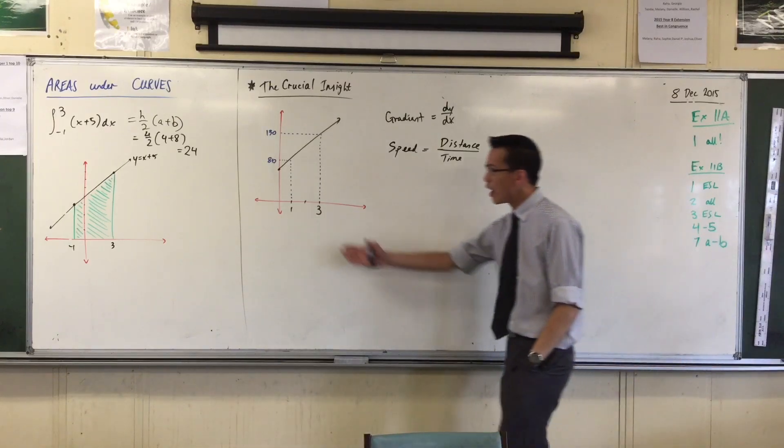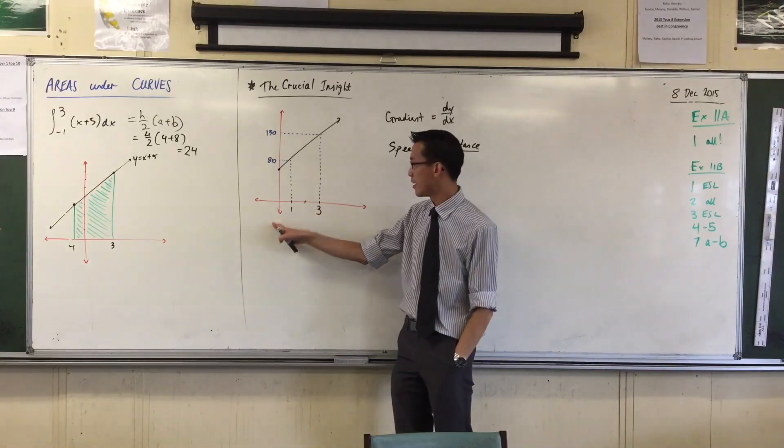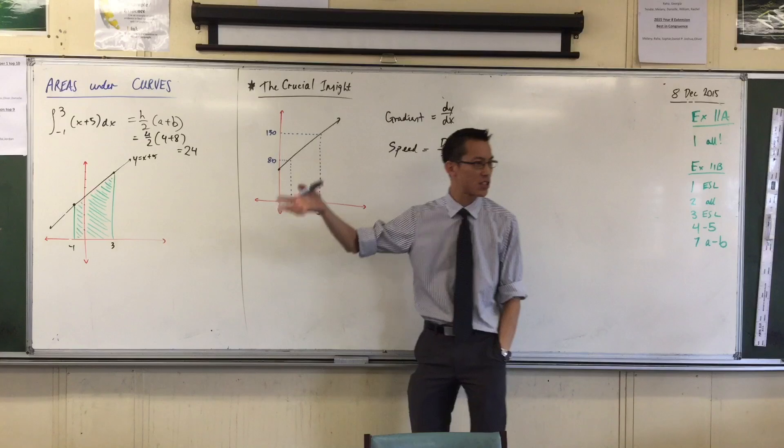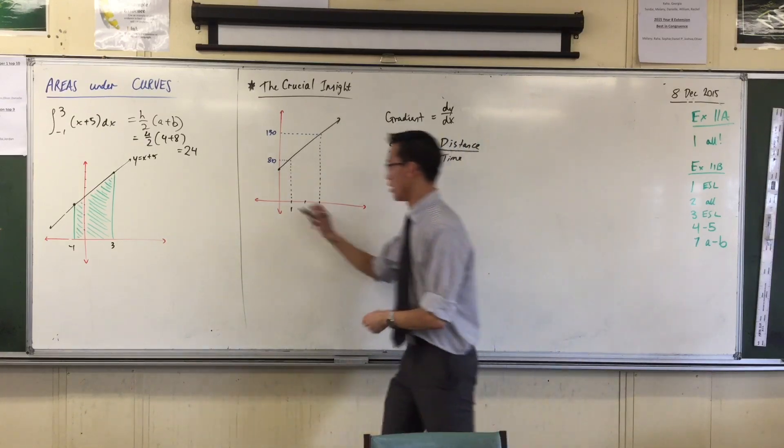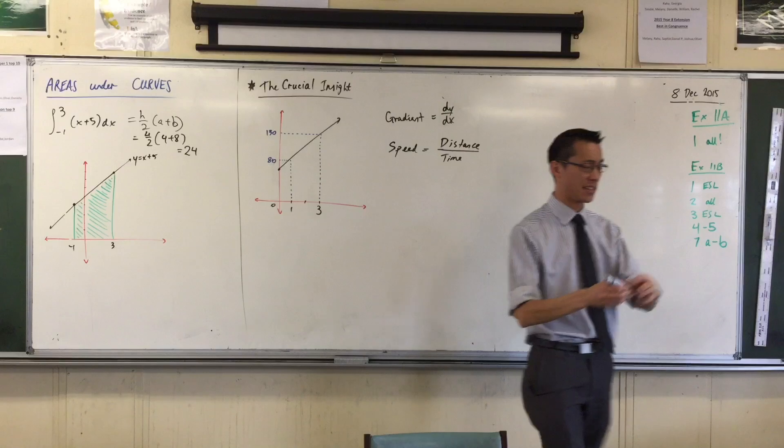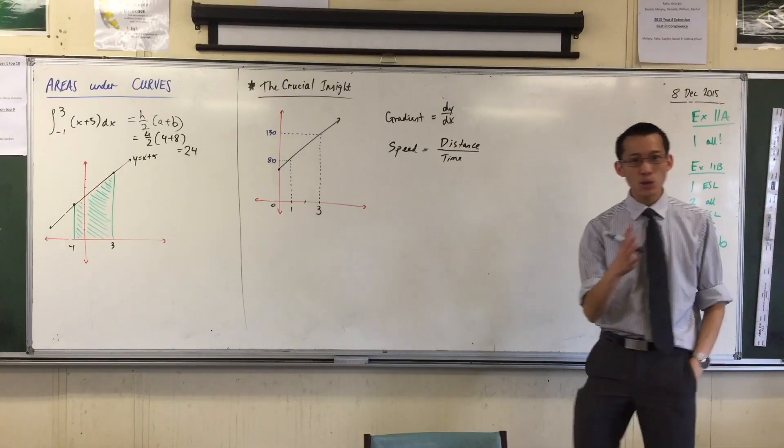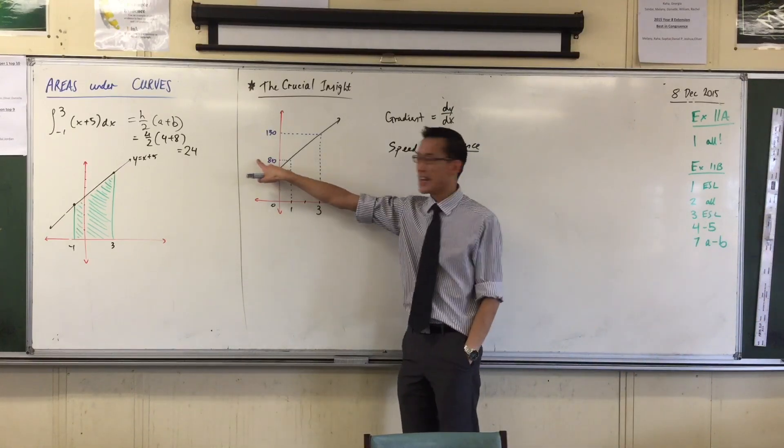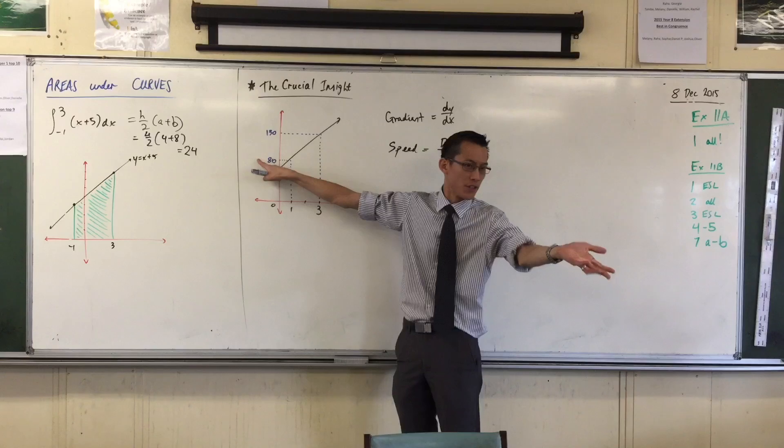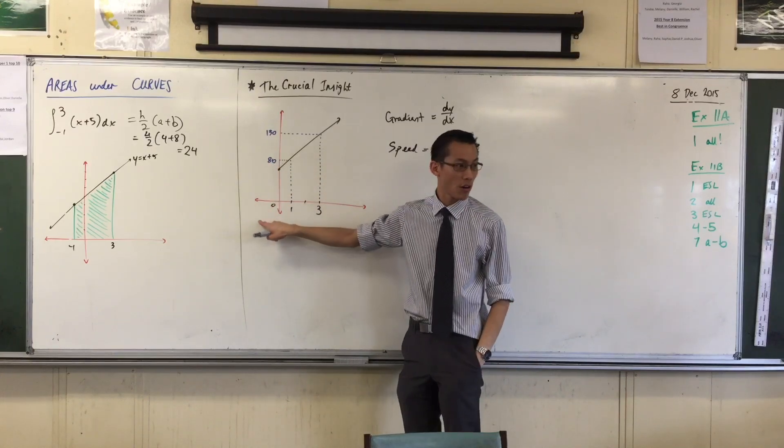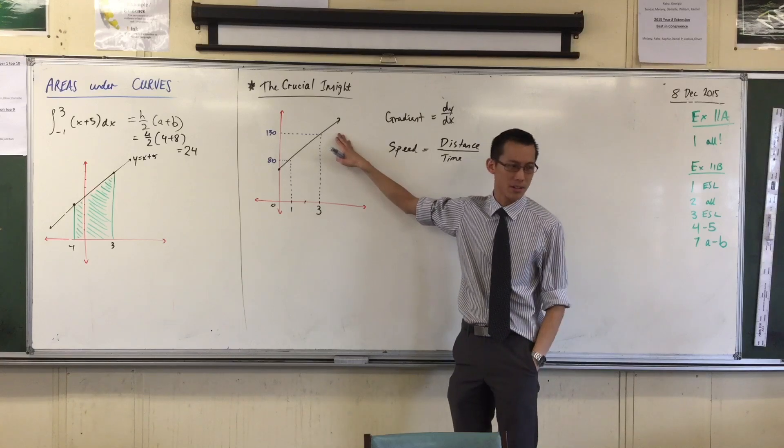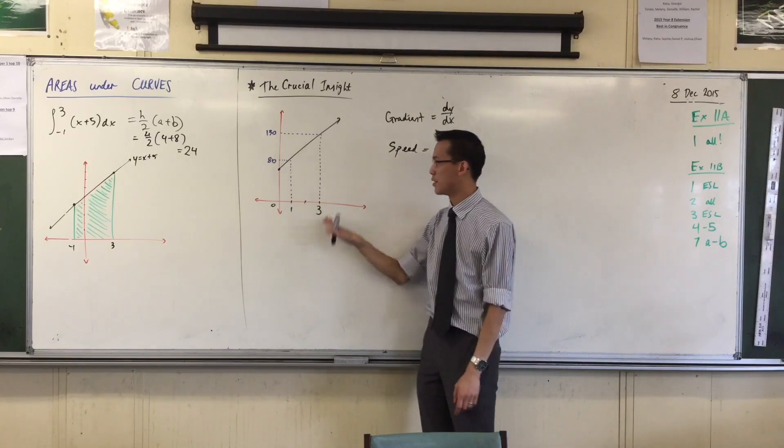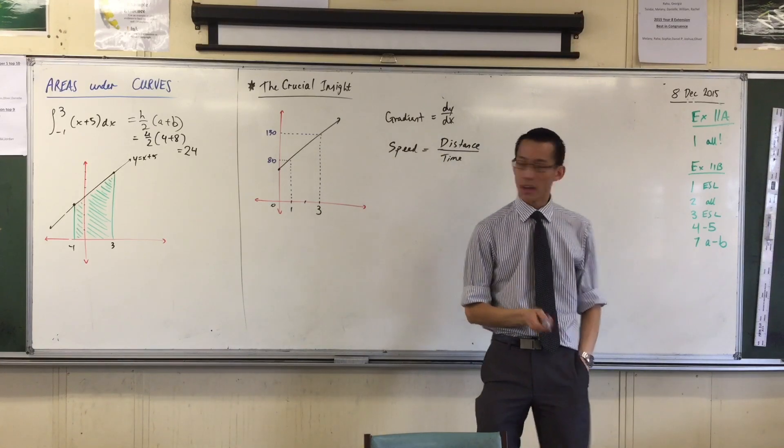What I want you to consider is, we start at a time zero, right? This object starts some distance away from the origin, right? Wherever that is, okay? You designate some origin. After one hour, it's 80 kilometers or 80 meters or whatever unit you like, 80 away from the origin, and after three hours, it's 130 units, kilometers. Actually, we'll just go with kilometers and hours away from the origin, okay?